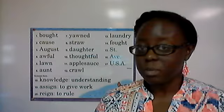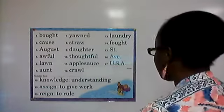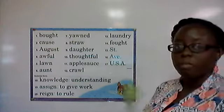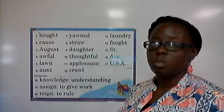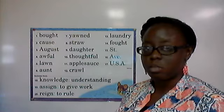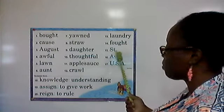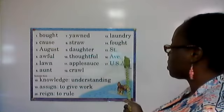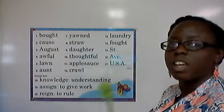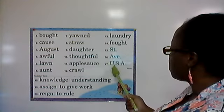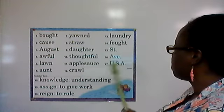Good morning and welcome back to spelling. We have a new spelling list again — spelling list number 26. In this spelling list we have abbreviations once again. In your book it has the meaning of the abbreviations or what the abbreviations stand for in parentheses. When you copy your spelling list, you don't have to write the words in the parentheses. All you need to write is the abbreviations. So here we have St. which stands for Street, Ave. which stands for Avenue, and U.S.A. which stands for United States of America.